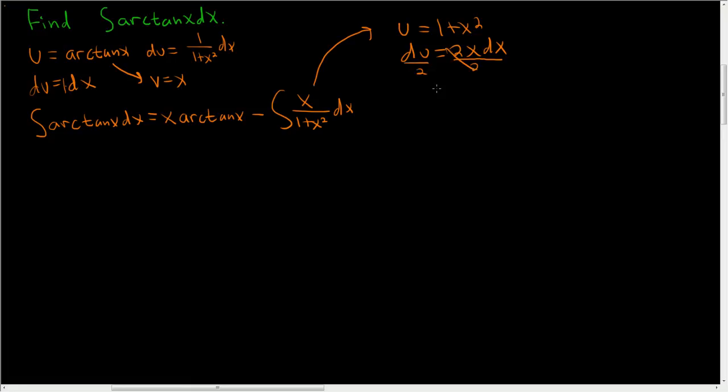So we have du over 2 equals x dx. At this point we will make the substitution. We have x dx here and we have x dx here. We have u here and we have u right here. So let's keep going.